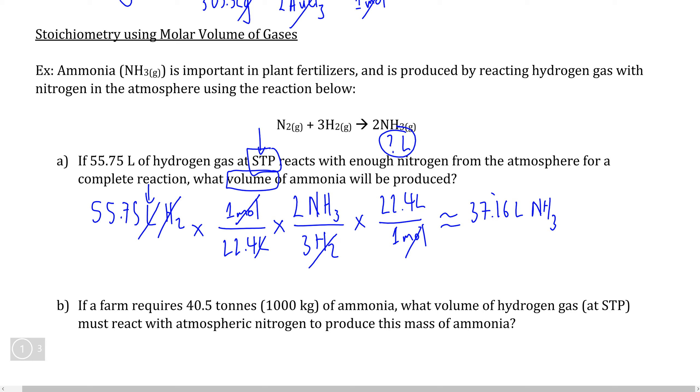Now you have to be careful about this because even though our starting measurement is in four significant digits, for reasons that we'll look at in the gas laws unit, 22.4 is actually a rounded answer to three significant digits. And because this answer is actually a rounded measurement, that means our final answer needs to be in three significant digits rather than four. So we can round this again to 37.2 liters of NH3.